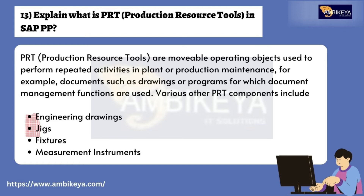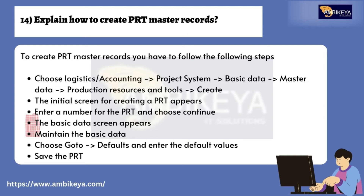Question number fourteen: explain how to create PRT master records. To create PRT master records, follow these steps: choose Logistics / Accounting > Project System > Basic Data > Master Data > Production Resources and Tools > Create. The initial screen for creating a PRT appears. Enter a number for the PRT and choose Continue. The basic data screen appears. Maintain the basic data, then choose Go To > Defaults and enter the default values. Save the PRT.